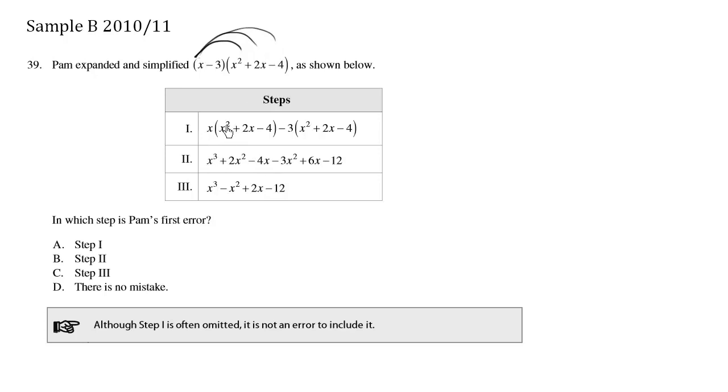We have x times x squared is x cubed. We have x times 2x is 2x squared. x times negative 4 is negative 4x. This is correct so far.